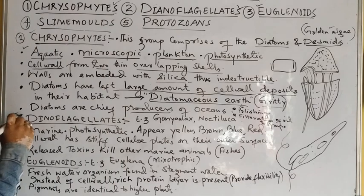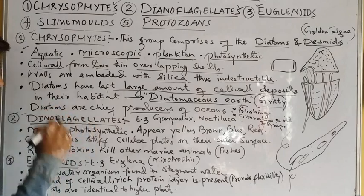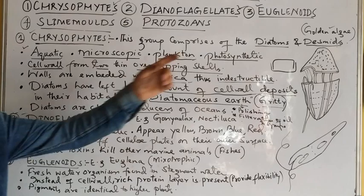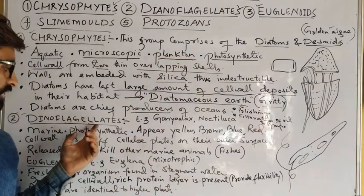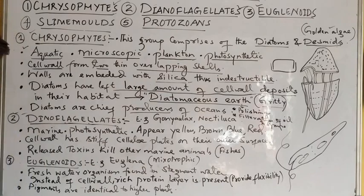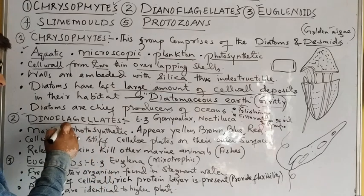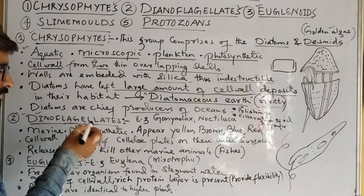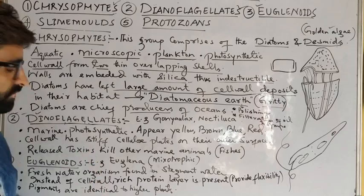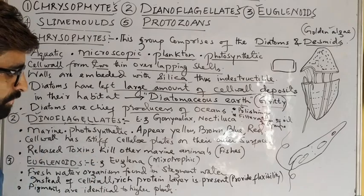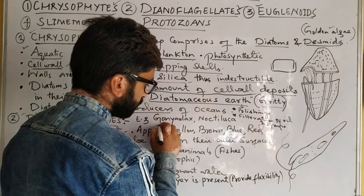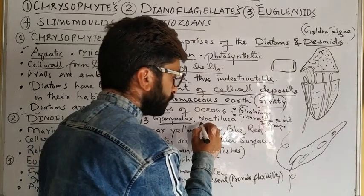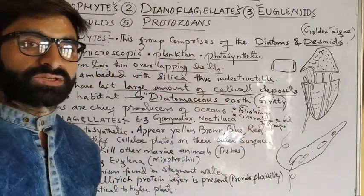Now we will discuss the next major group: dinoflagellates. Examples of dinoflagellates from kingdom Protista include Gonyaulax, Noctiluca, and Gymnodinium.